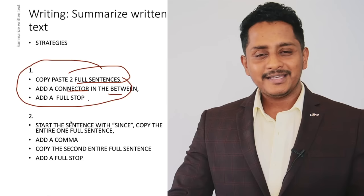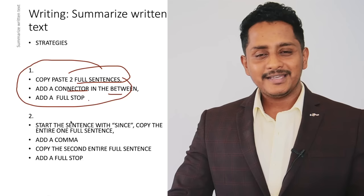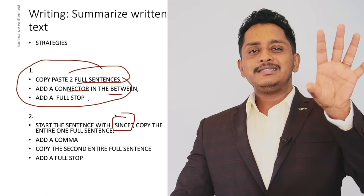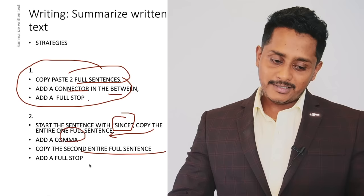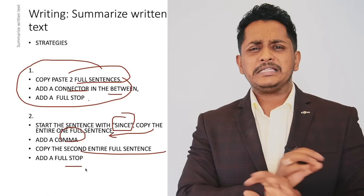Strategy number two: start the sentence with the subordinate conjunction 'since.' Copy the entire first sentence — not half a sentence. After a full stop, up until you find the next full stop. Copy the entire sentence and then add a comma. Then copy the entire second full sentence. Add a full stop. So: since, one full sentence, comma, another full sentence, full stop. Grammatically they'll be perfect. Logically they don't have to mean anything to the software — all it wants is the grammar to be perfect.